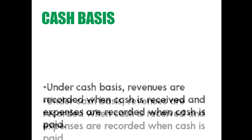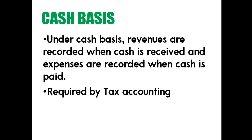The opposite method is cash basis. Under cash basis, your trigger is cash — you record sales only when you receive cash, and you record expenses only when you pay cash. Cash basis is very different from accrual basis and is used only for tax accounting.